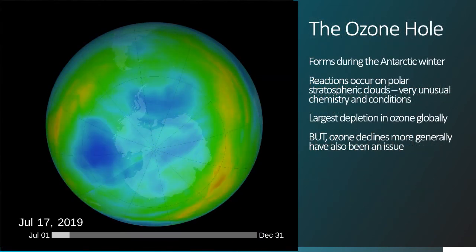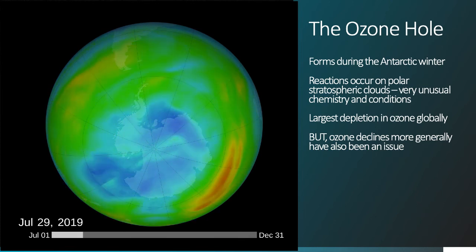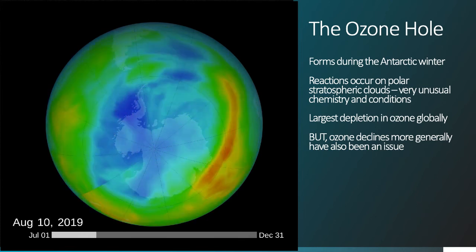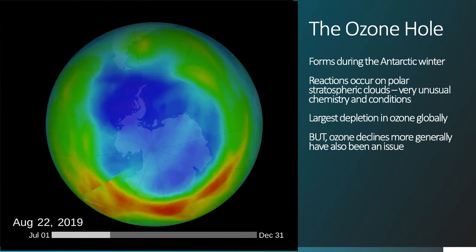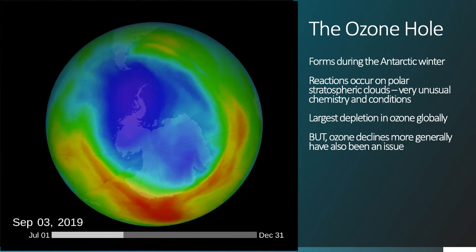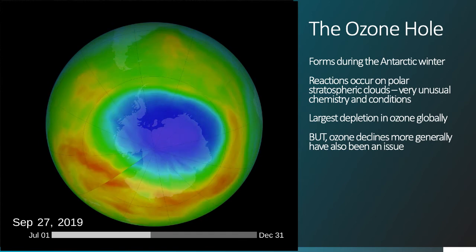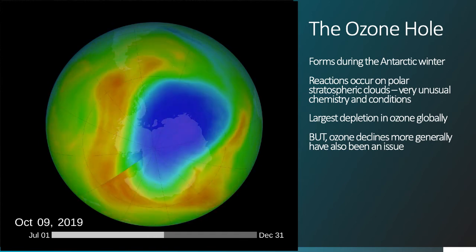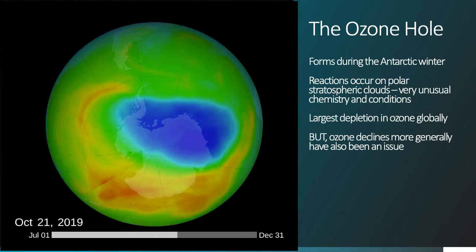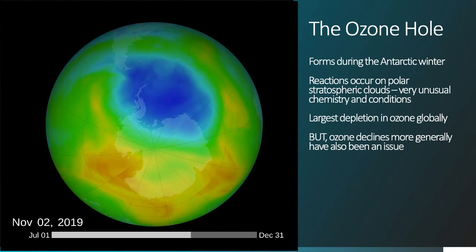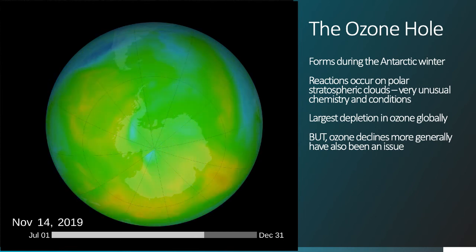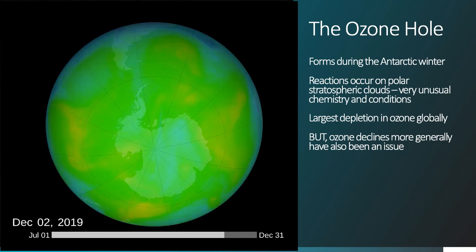The ozone hole forms because of some very unusual conditions over the Antarctic continent. There are very strong winds that race around the Antarctic continent in the winter, closing off this air mass to mixing with the rest of the world. During that time in the dark, chlorofluorocarbons react over and over again to reduce ozone. At the end of the season, that hole breaks up and these ozone-depleted air masses can move out over the southern hemisphere.